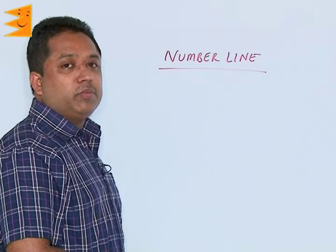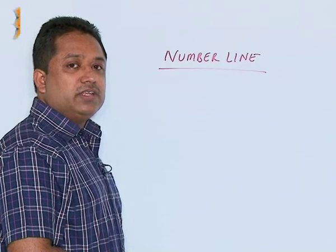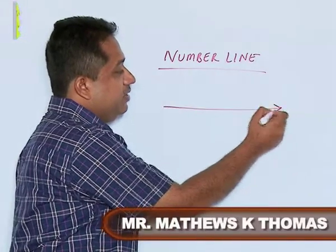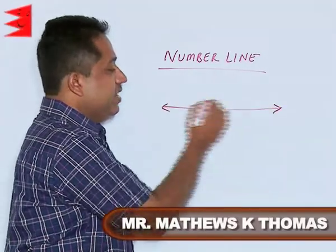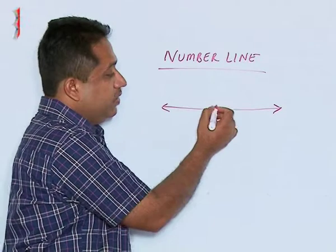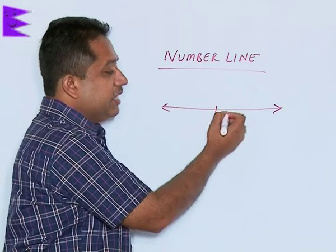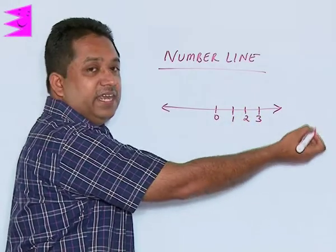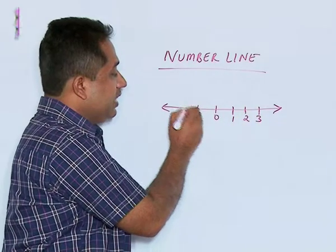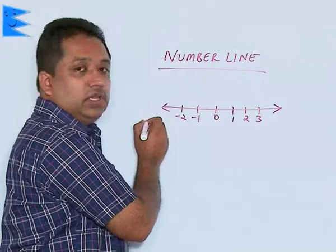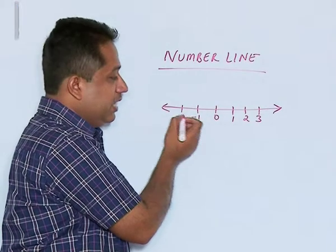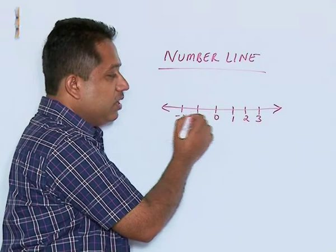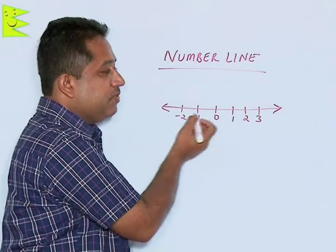Plotting rational numbers on a number line. A number line is a line which extends indefinitely in both directions, with 0 in the center, positive values on the right extending up to infinity, and negative numbers on the left. Any integer, whole number, or natural number can be represented very easily here.